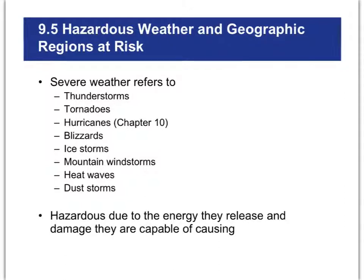Anything we call hazardous weather consists of about seven or eight different kinds of events. We've got thunderstorms, tornadoes, and hurricanes — and the hurricane is actually going to have its own chapter, Chapter 10, so we won't touch on that too much here. But blizzards, ice storms, mountain wind storms, heat waves, and dust storms are all hazardous primarily because of how much energy they release, and that energy can do work on your house or even on you, and that's what we see as disasters.